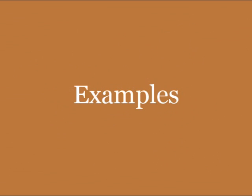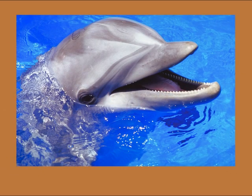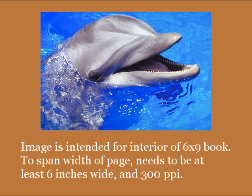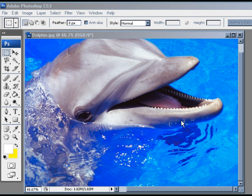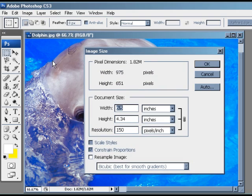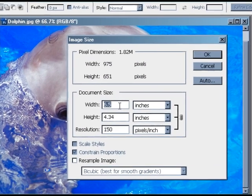Now in order to demonstrate how size and resolution work together, I have a few examples I'd like to show you. First let's look at this photo. Let's say we're interested in placing this image on a page inside a 6x9 book. Since the image is landscape-oriented, we suggest that it be roughly 6 inches wide. In Adobe Photoshop, you can check the size and resolution by going to Image and Image Size. In the window that pops up, you see that the image is 6.5 inches wide, which is a good size.